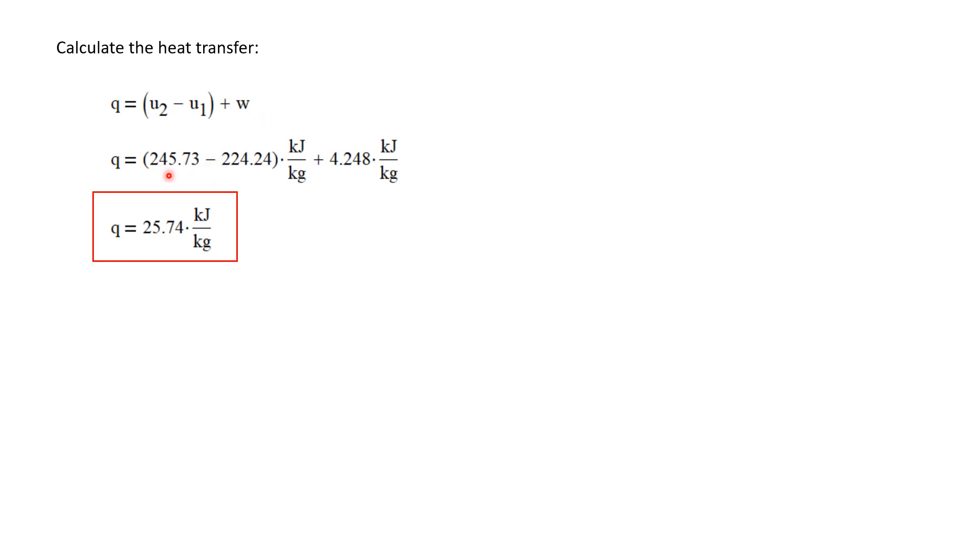u₂ was given as 245.73 and u₁ was given as 224.24, both with units of kilojoules per kilogram. We previously calculated the work to be 4.248 kilojoules per kilogram. We have consistent units here so we can add these terms.